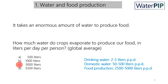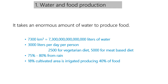Compare that with the amount of water we need for drinking — that's about 2 to 5 litres per person per day. For domestic use, that's around 50 to 500 litres per person per day. Food production is an order of magnitude larger, between 2,500 and 5,000 litres per person per day. In total, food crops evaporate some 7,300 cubic kilometres of water per year — that is 7 followed by 15 zeros of litres — which translates to about 3,000 litres per person per day.